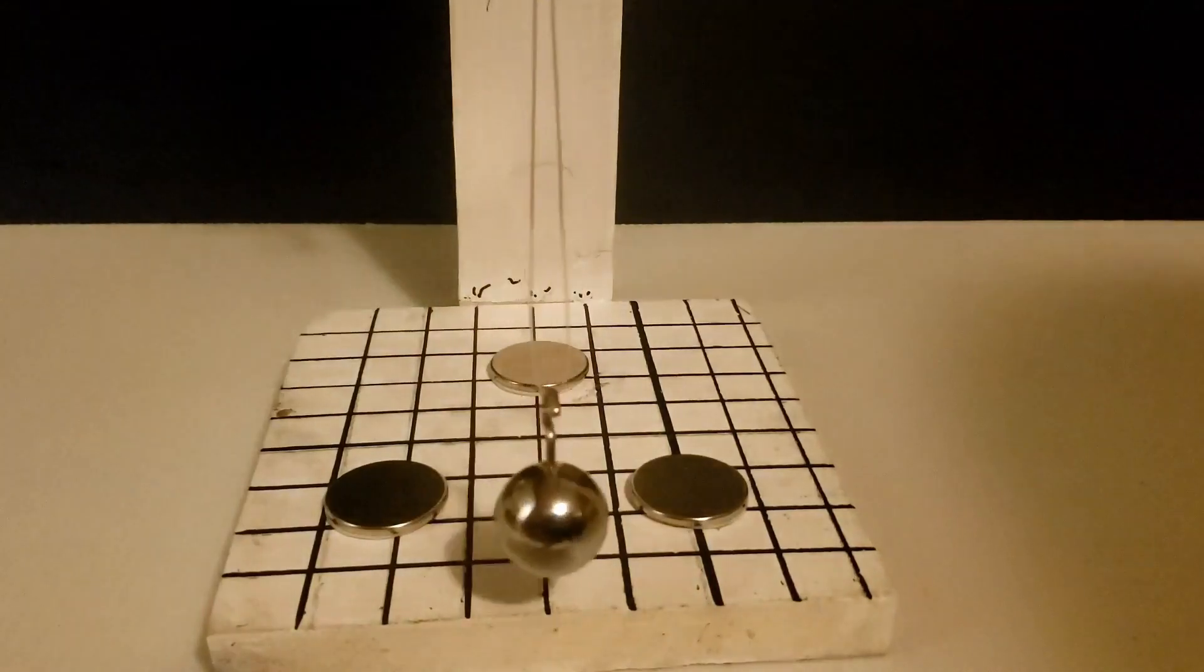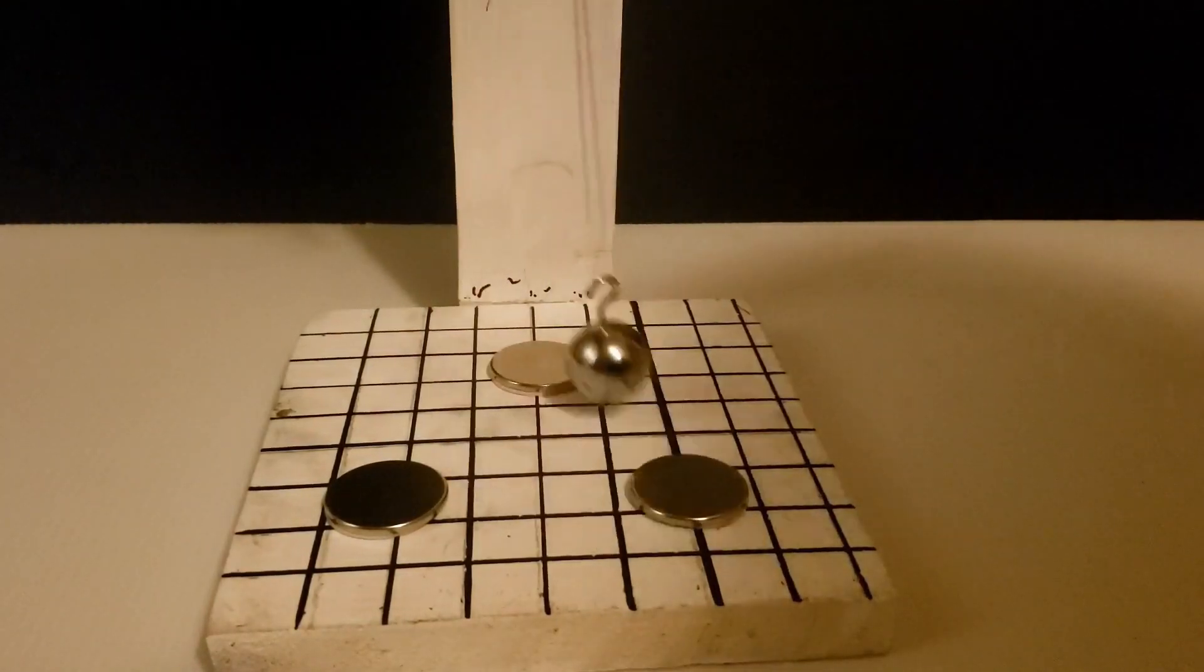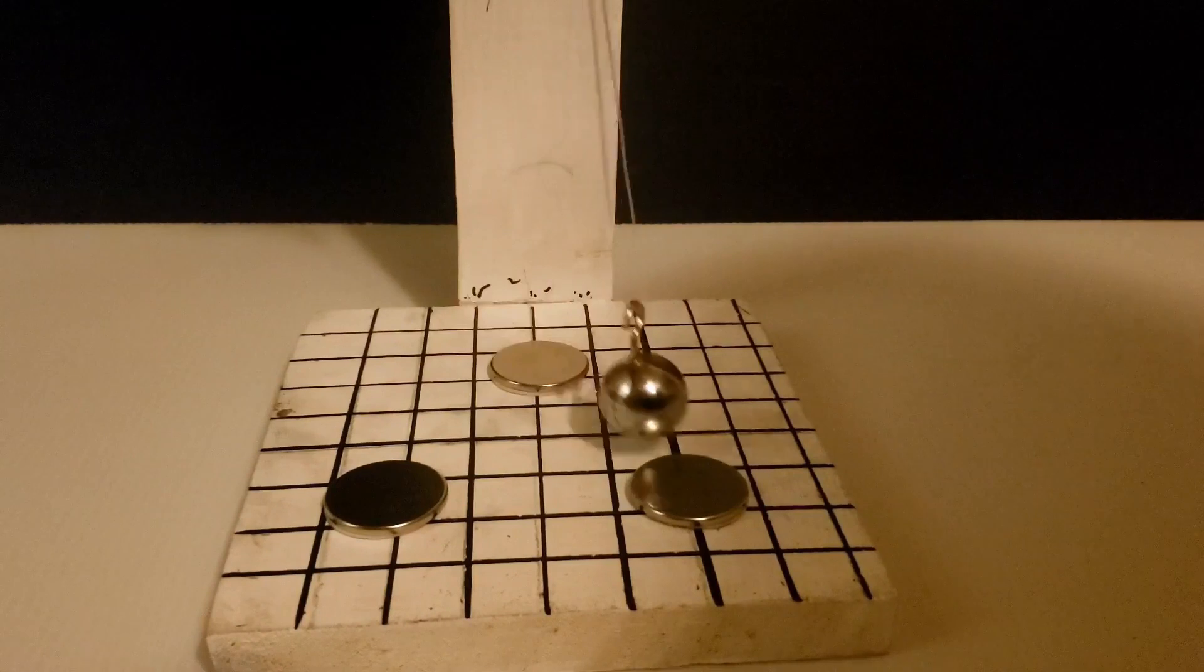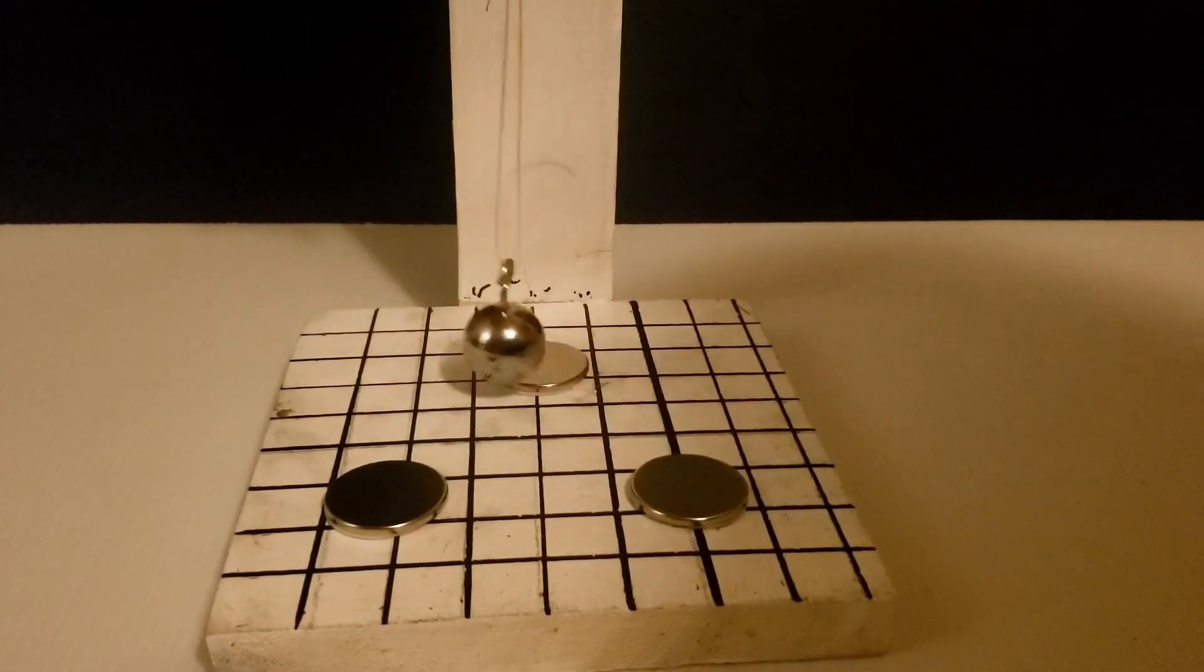However, when the bob is released from a slightly different place, almost exactly the same as the last run, it follows a completely different path and gets pulled in by a different magnet.